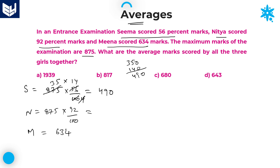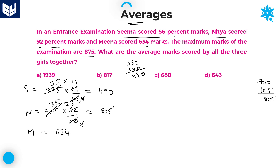Next, for Nithya: 92% of 875. 25 into 35 — 25 into 30 gives 750, and 35 into 3 gives 105, which is equal to 805. So this value is equal to 805.